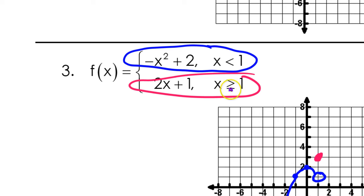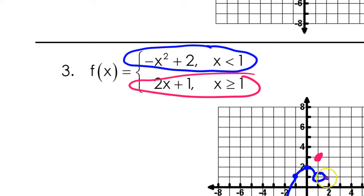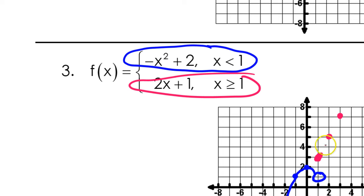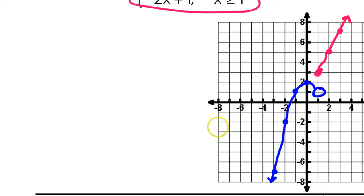From there, I want values that are greater than 1, so I'm going to scroll down. So 2 comma 5 and 3 comma 7. There's 2 comma 5 and 3 comma 7. You see that the graph is going like this. So there's your piecewise function.